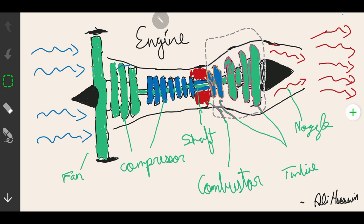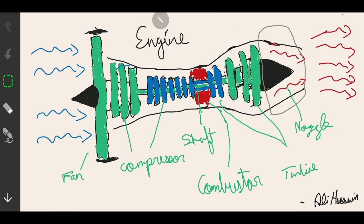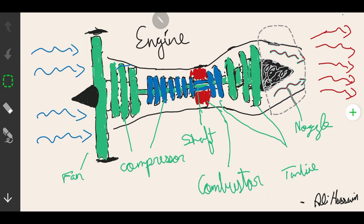Finally, airflow reaches the nozzle, which is the last part of the engine. It acts as an exhaust duct. Cool air from the bypass and hot air from the turbine are combined here, producing forward thrust.